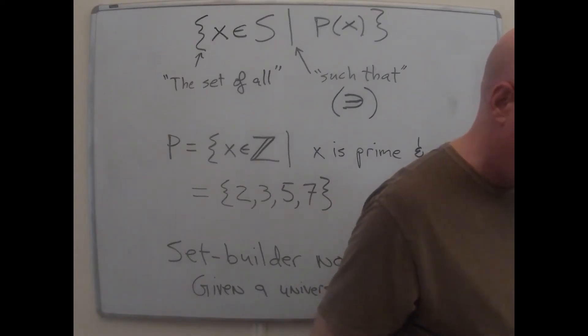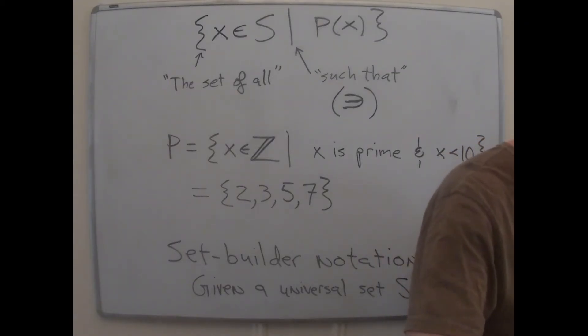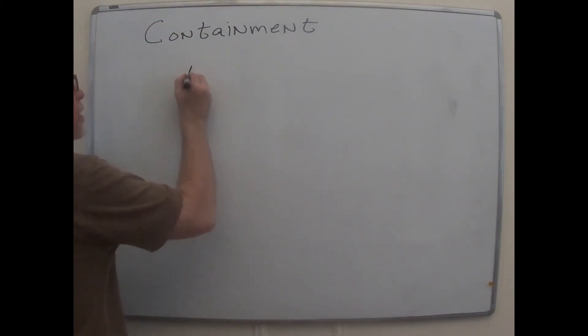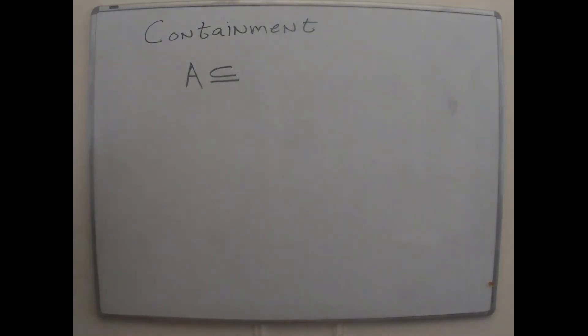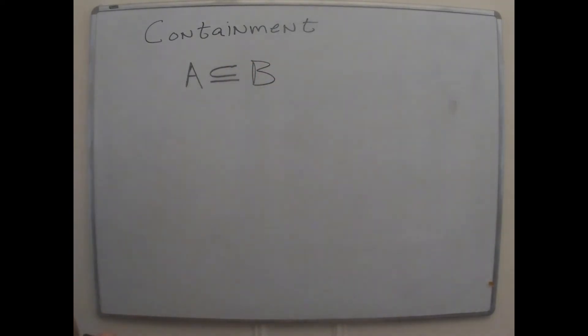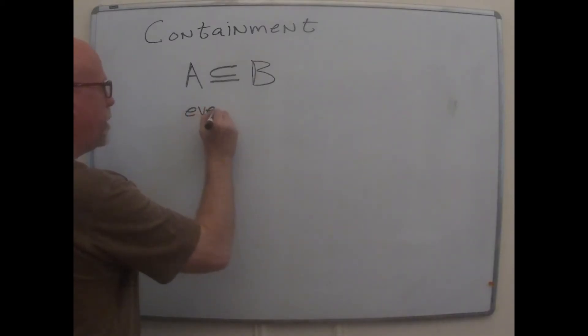Continuing on with sets. The next notion we want to discuss is the idea of one set being contained in another. Containment is denoted symbolically like this. You have a kind of a round version of the less than or equal sign. It looks like less than or equal except rounded off instead of pointy. Some people say it looks like the letter C, which is kind of cool because it's contained. Anyway, A is contained in B like that. And that means that everything that's in A is also in B.